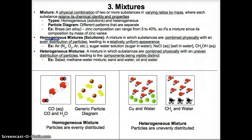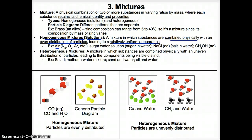A homogeneous mixture is a mixture where substances combine physically with an even distribution of particles, and that therefore leads to a relatively uniform appearance — even though it's a mixture. For example, air is a homogeneous mixture because it appears uniform, but actually it's a mixture. It contains molecules of the different elements nitrogen and oxygen, atoms of elements like argon, and also compounds.